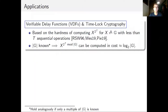Some applications of hidden order groups are verifiable delay functions and time-lock cryptographic constructions built upon them. Recently it has been shown that verifiable delay functions can be built based on the hardness of computing x to the power 2^t for a random group element with fewer than t sequential operations. However, if the order of the group is known, we can reduce this exponent, so for VDFs we need the group order to be hidden.